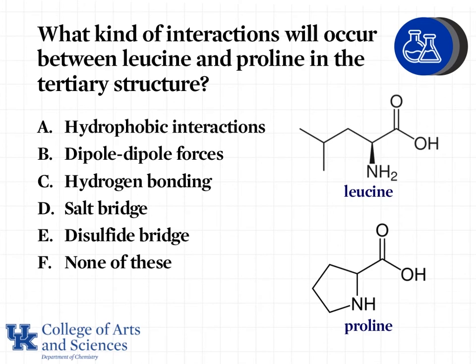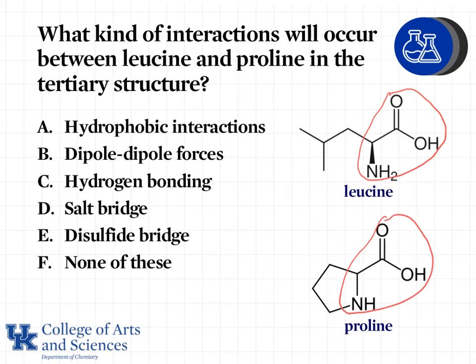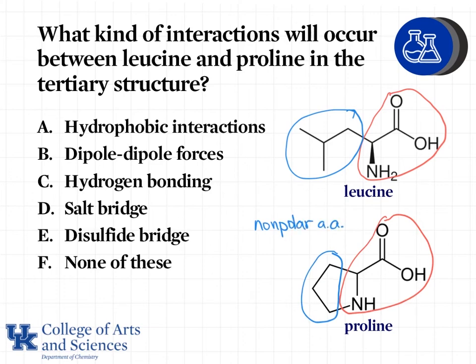What kind of interactions will occur between leucine and proline in the tertiary structure? The first thing we have to do is identify what leucine and proline are. We can look at their structures — we have the backbone and then the side chains. The side chain of leucine and the side chain of proline both contain only carbons and hydrogens, so both of these are nonpolar amino acids. As a result, the only type of interaction they can have are hydrophobic interactions — like the dispersion forces we saw in nonpolar molecules.